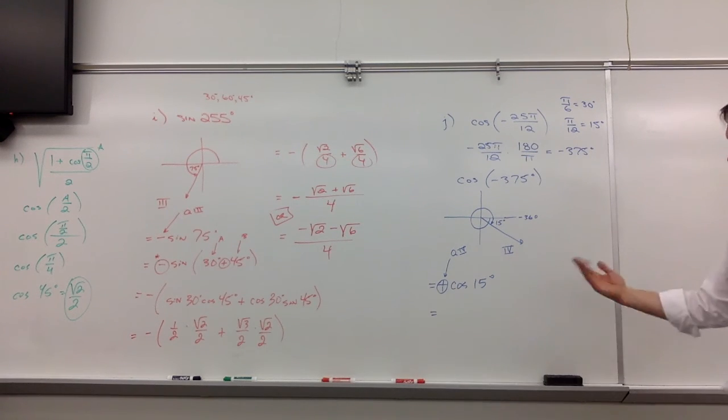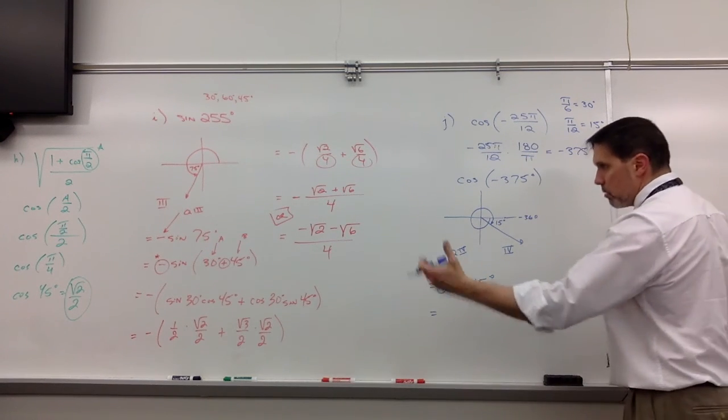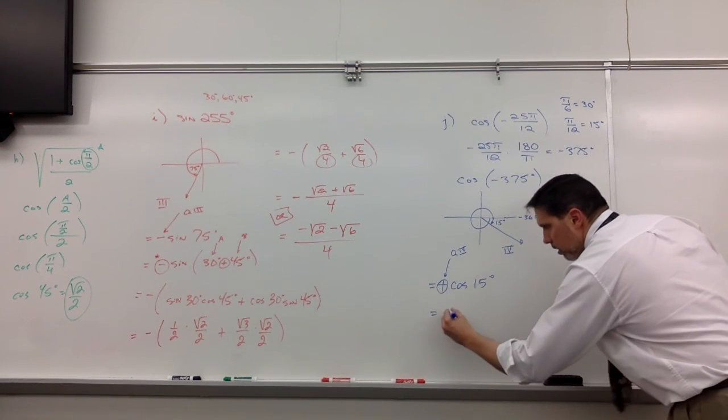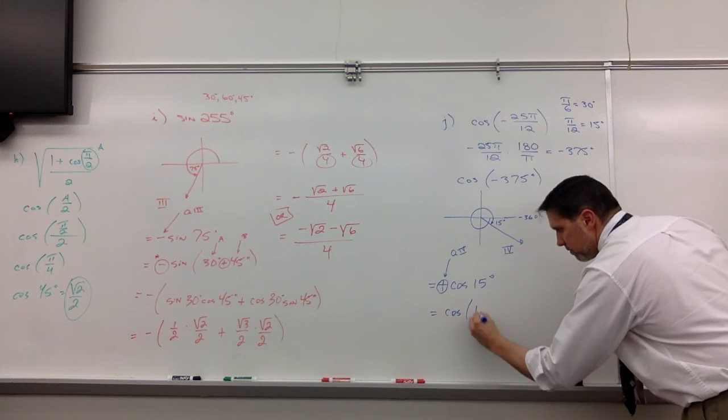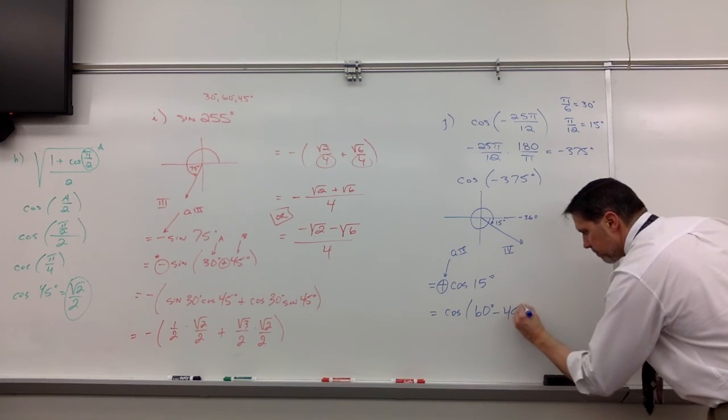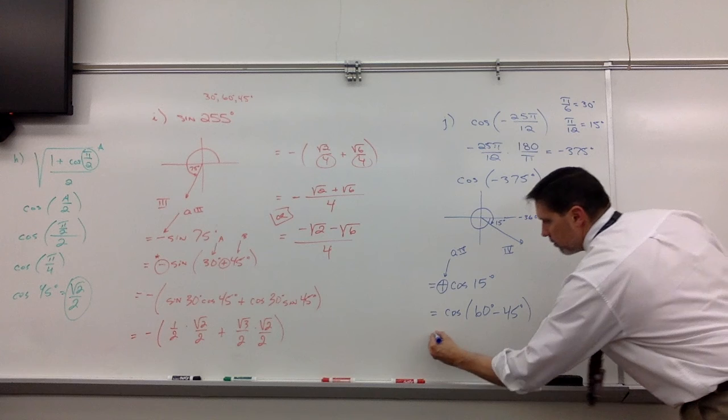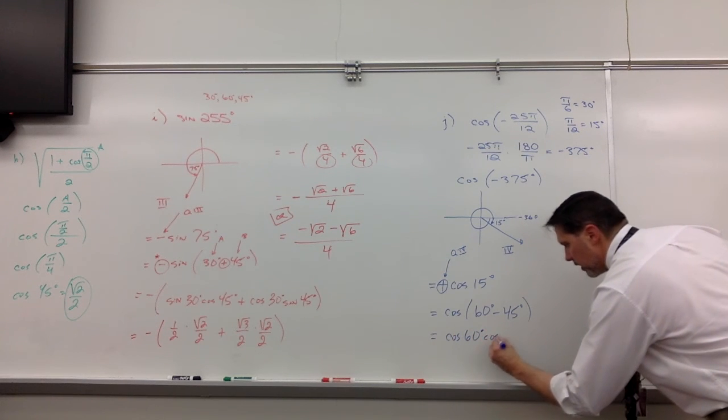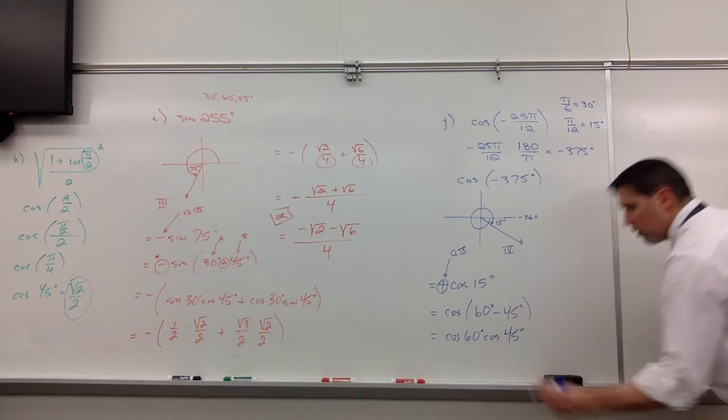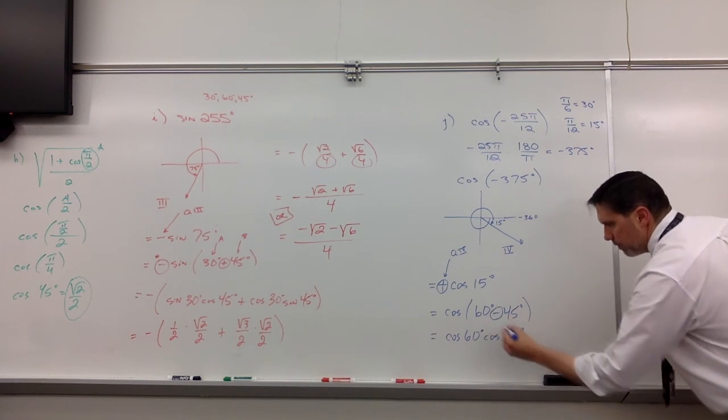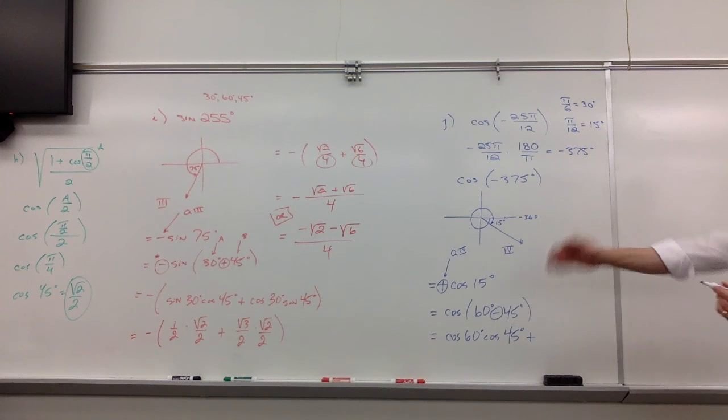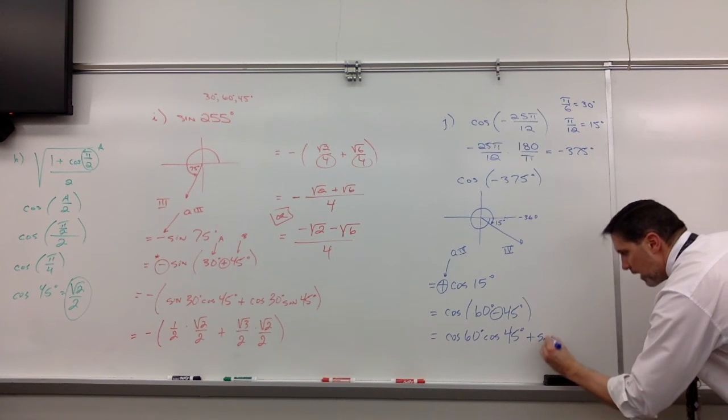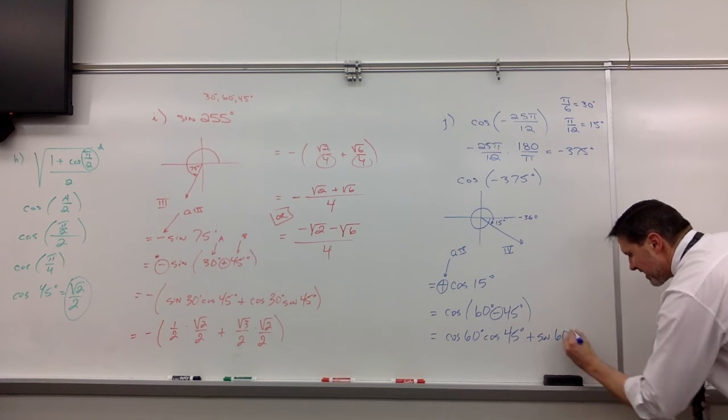So, I'm going to call this the cosine of, let's do something different, a 60 minus 45. A little different there. So, we're looking at the cosine of the first angle, cosine of the second angle. This is how cosine difference works. Now, remember, careful, that'll be plus for cosine difference. It's the opposite. And then sine of the first, sine of the second.